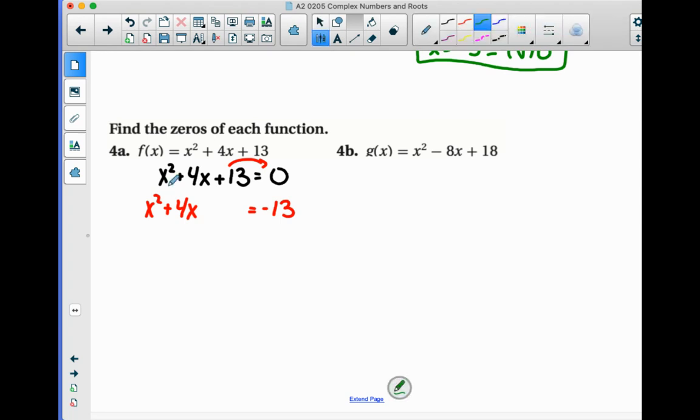We complete that square by dividing that term by 2. 4 divided by 2 is 2. Squared is 4. So we'll add 4 here. We'll add 4 to the right side.